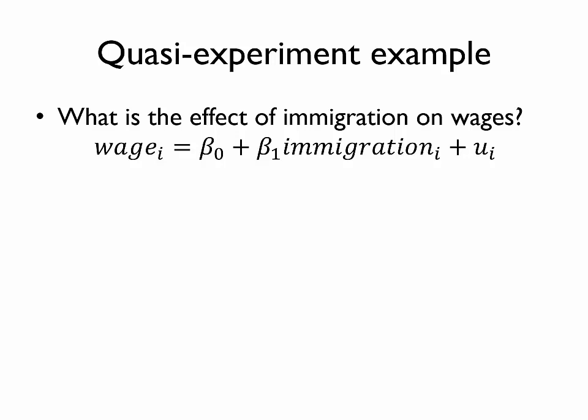You can imagine some problems with this. The estimated β₁ coefficient would represent the relationship between immigration and wages. However, there are probably omitted variables here. For example, perhaps regions near borders, near national borders, could get more immigrants, but they could also have different economic conditions for some other reason. And so we should be reluctant to attribute the estimated β₁ coefficient to the impact of immigration on wages.